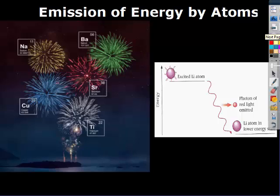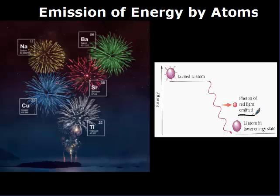Sometimes we see those color emissions in fireworks. The electrons get excited and different elements give off different colors. Looking at the picture on the right, lithium gets excited when the firework is lit — all that energy from the fire goes to the lithium atom. When it comes back down, lithium always emits red light until it eventually reaches its lower energy state. So your red fireworks could be due to lithium, or green is going to be due to barium.